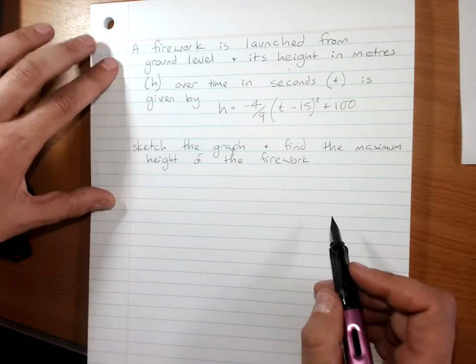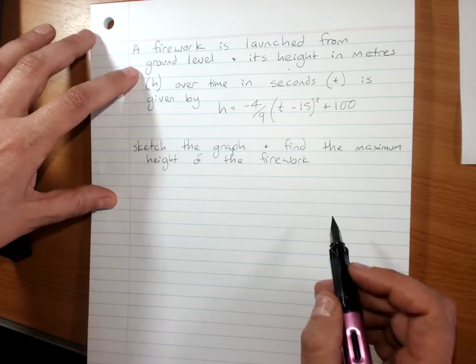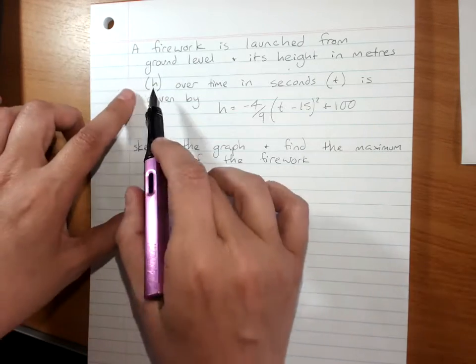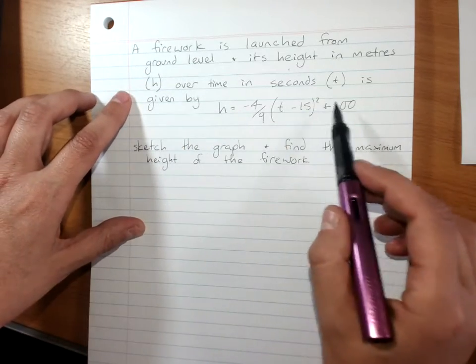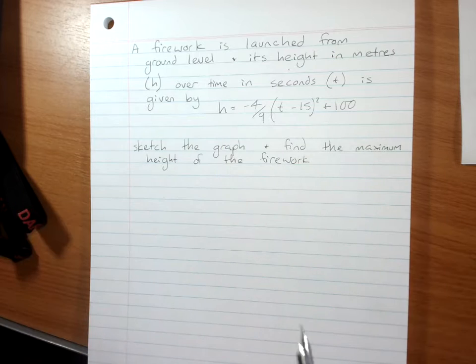Applications of parabolas. A firework is launched from ground level and its height in meters, h, over time in seconds, t, is given by this parabola.